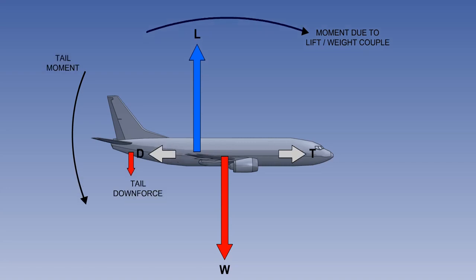If the tailplane is producing a balancing force, this will add to or subtract from the lift required to balance the weight. For a downforce, the usual situation, lift must equal the weight plus the tailplane downforce, and for an upforce, lift must equal weight minus the tailplane upforce.